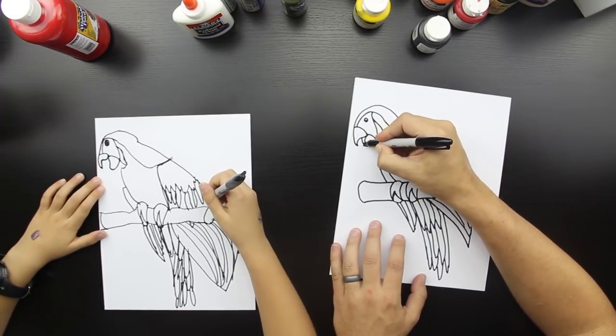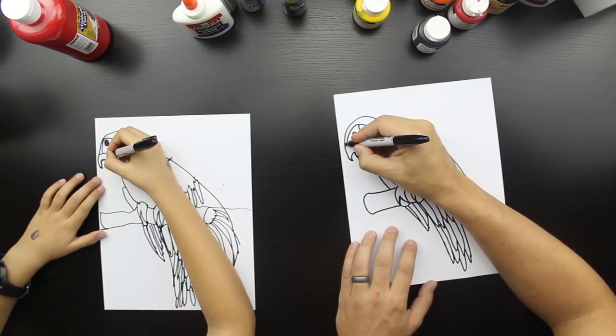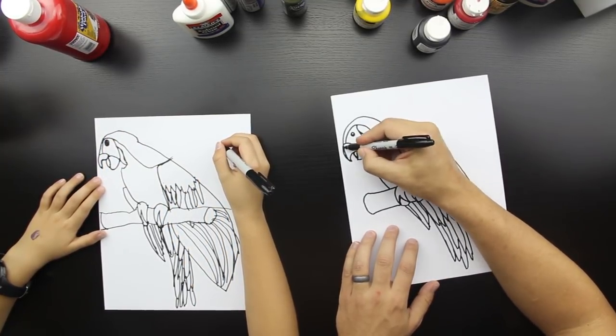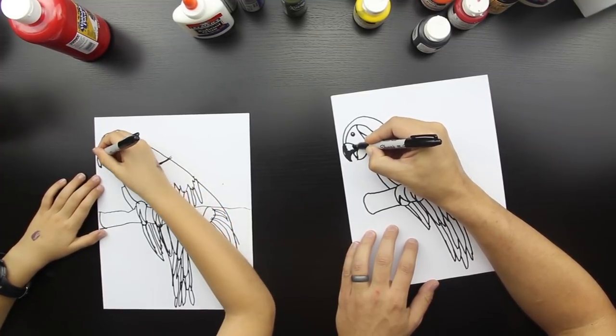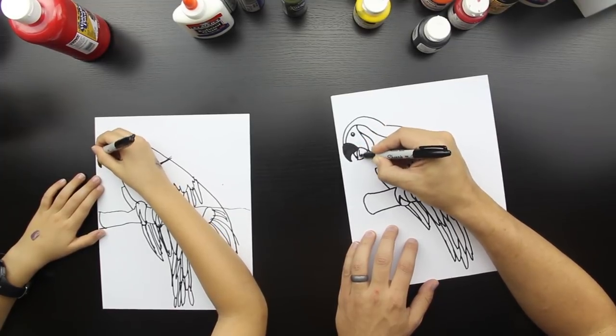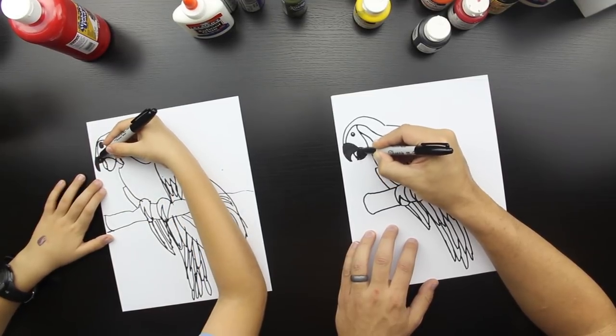And then let's draw a little tongue in there. Parrots have tongues, huh? Long tongues. And then what we could do is we could color in his beak since a lot of them have black beaks. Good job.